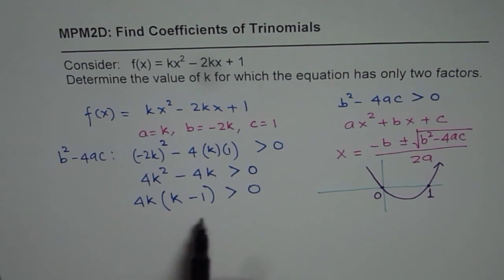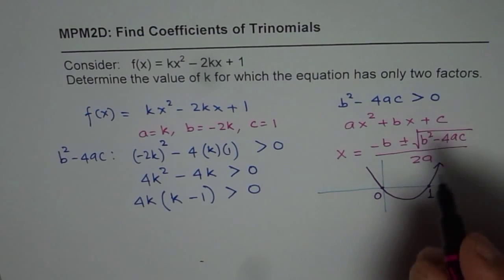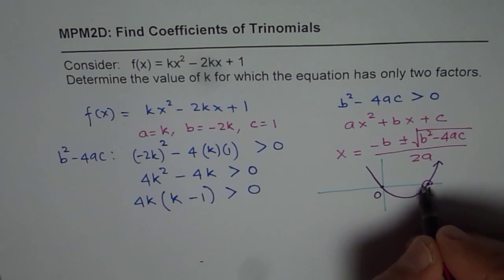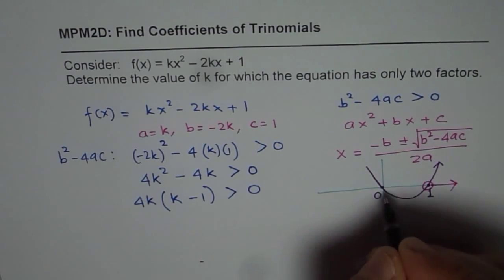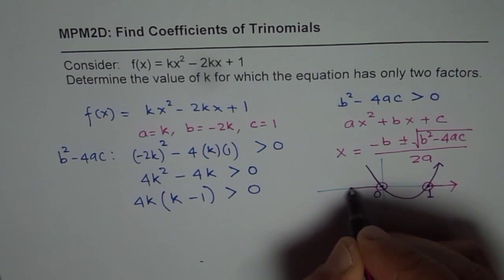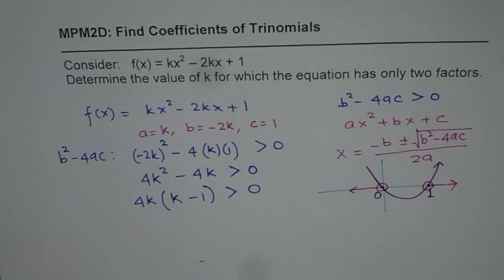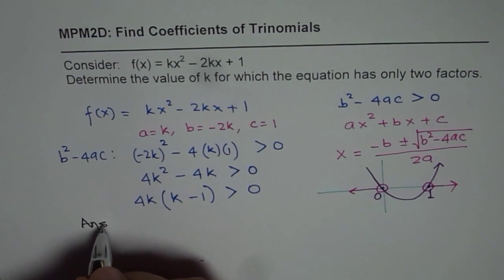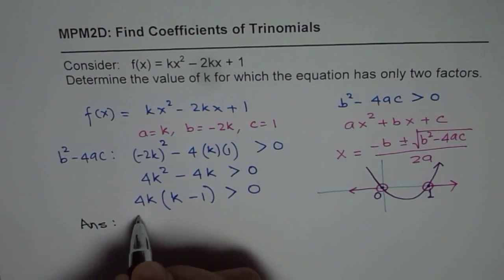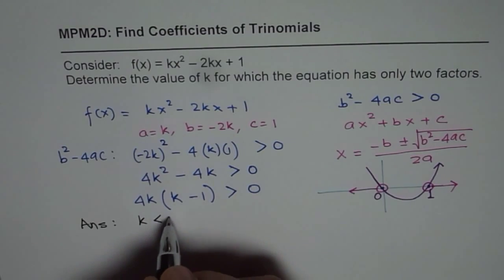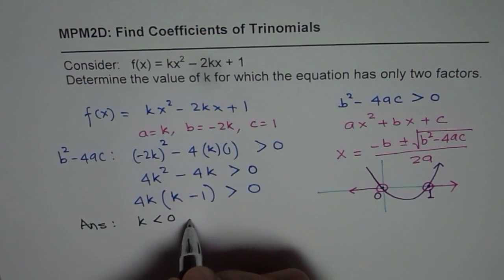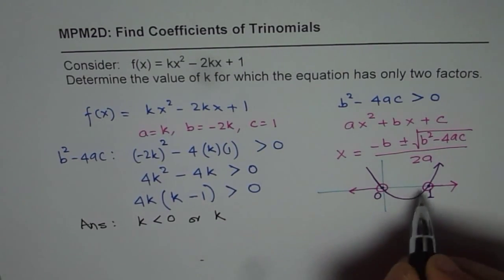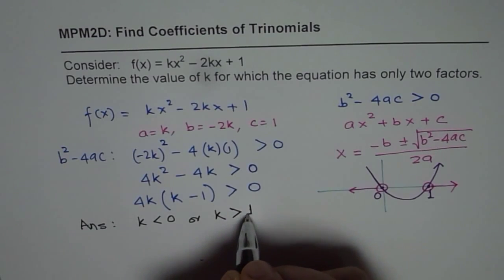Where this point is 1 this point is 0. Now if 4k times k minus 1 is greater than 0, what are we looking for? We are looking for values of k which are on the right side of 1 or on the left side of 0. And therefore we can write down our answer which is that k is less than 0 or k is greater than 1.